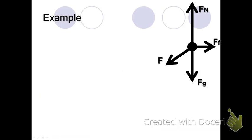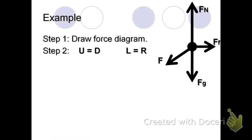Step number two is to simply write out up equals down and left equals right. We know it's constant velocity. That tells us our forces are balanced. So this is what we write.